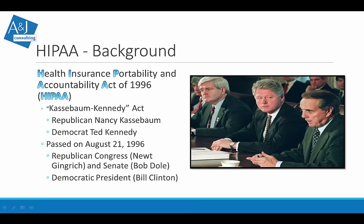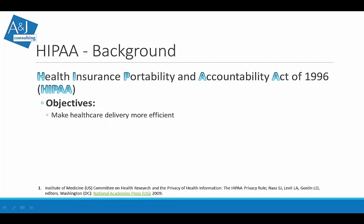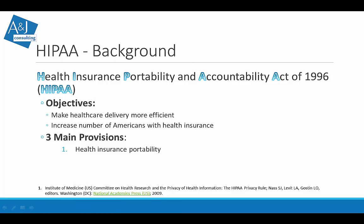The Health Insurance Portability and Accountability Act — HIPAA — had many major players involved. Its main objectives were to make healthcare delivery more efficient and to increase the number of Americans with health insurance. We've been discussing expanding health insurance coverage for 20 to 30 years; it's not a recent concept. The main provisions were health insurance portability, tax provisions, and administrative simplification.